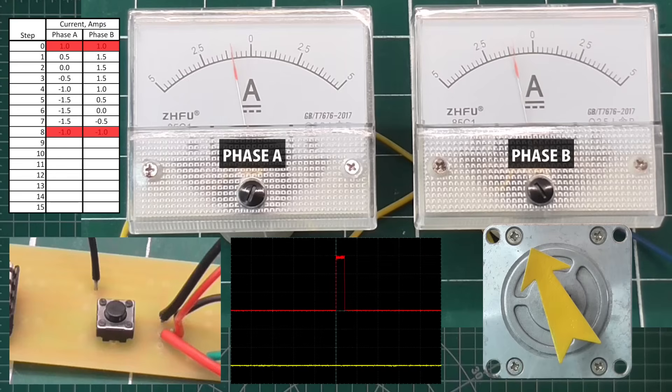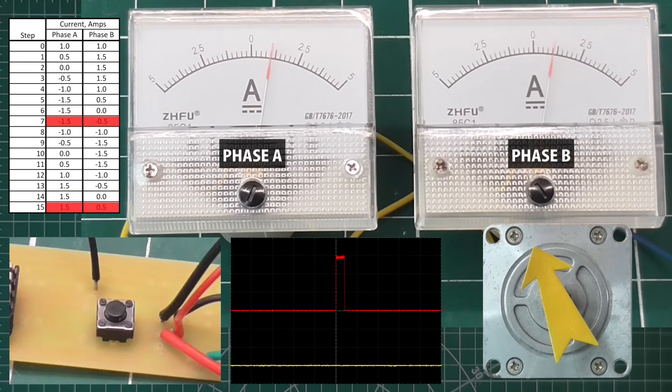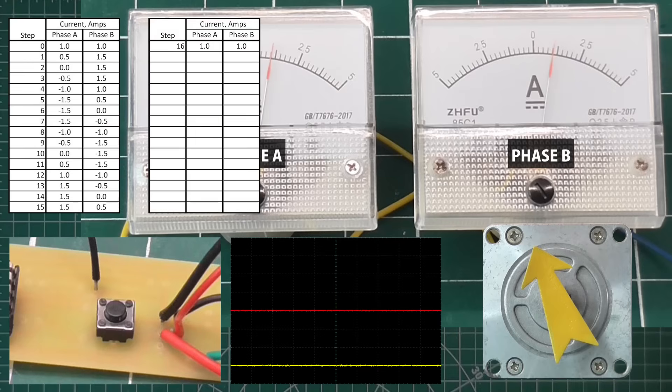As we continue, a pattern emerges. Each value is now the inverse of what it was 8 steps before. At the 16th step, we are now back where we started, and the cycle repeats from here on.